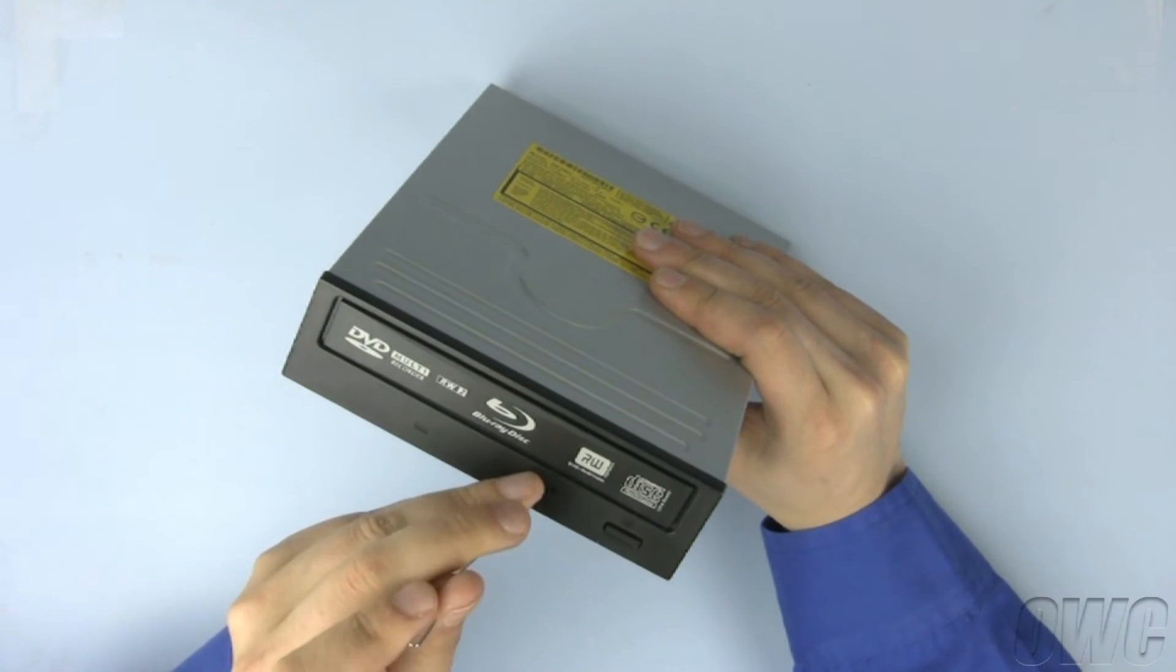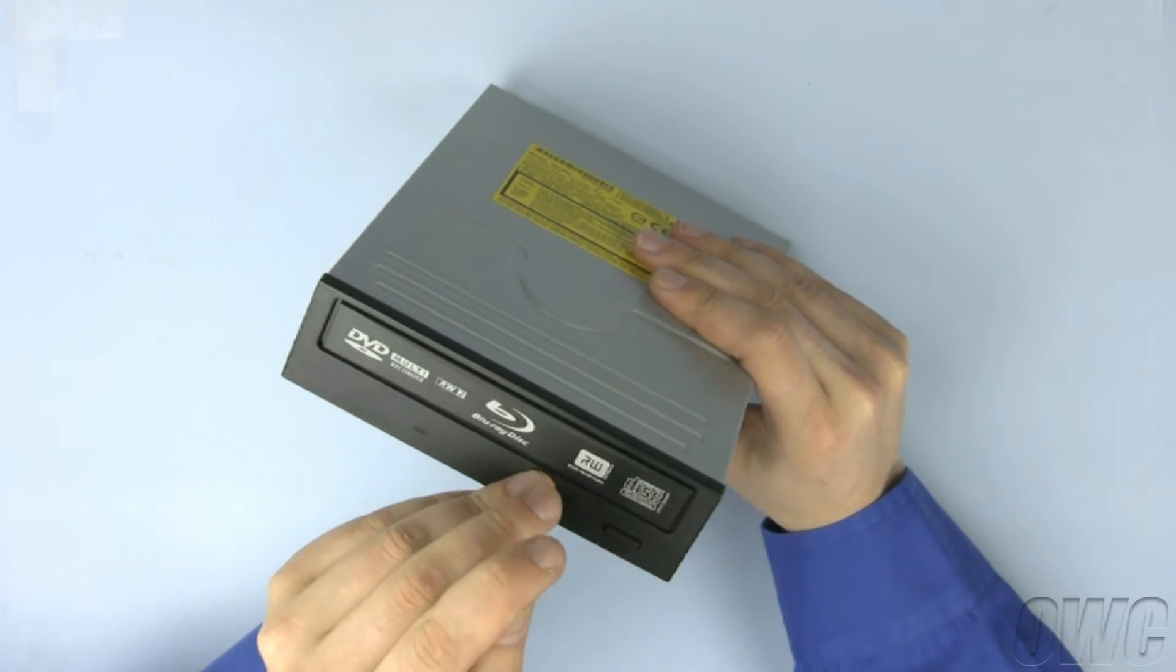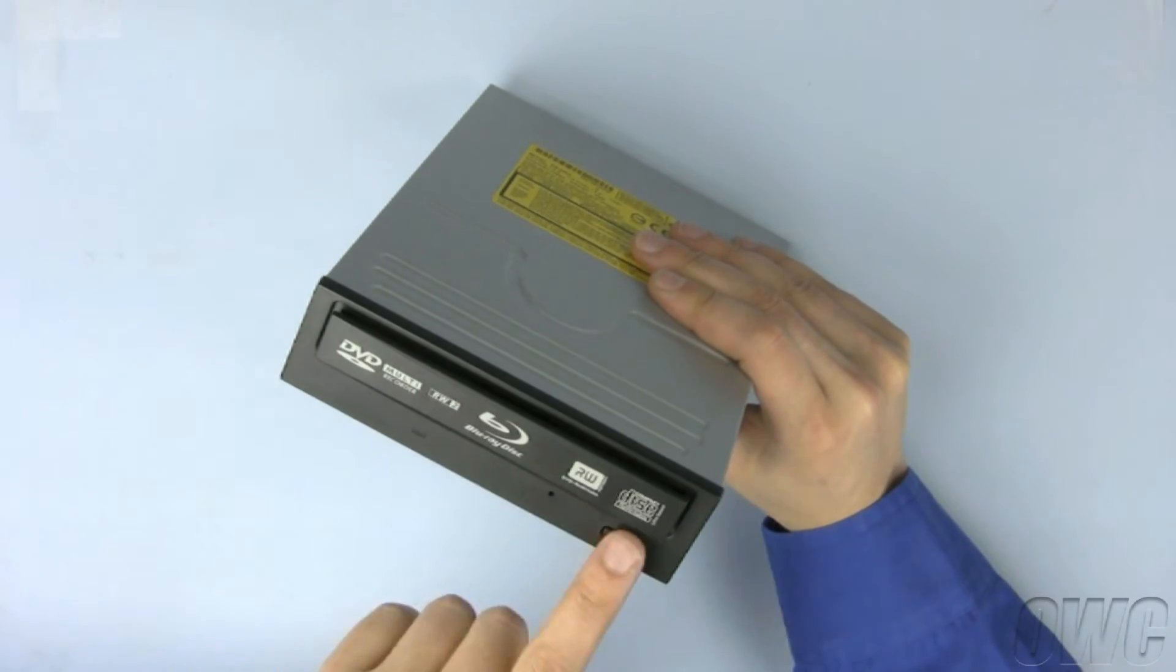Insert the straightened paper clip into the manual eject hole on the drive. Firmly pushing in will cause the drive tray to pop out slightly.